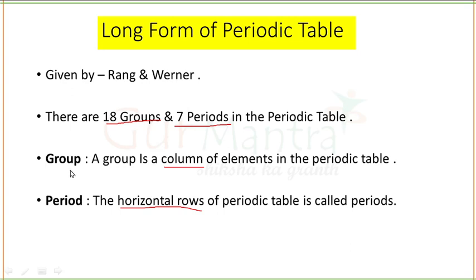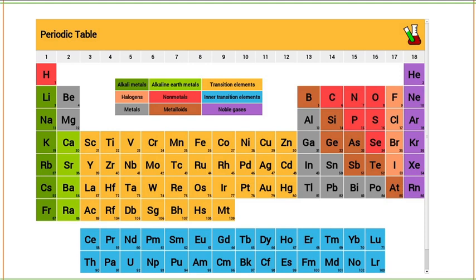Basically, a group is a column of elements in the periodic table. There are 18 groups in the periodic table. This is our long form of periodic table having 18 groups and 7 periods.